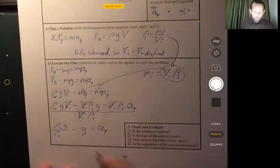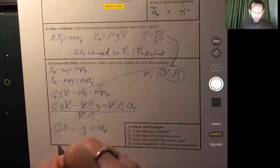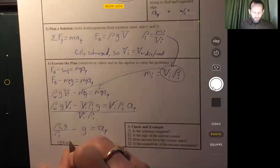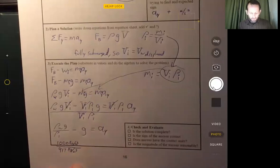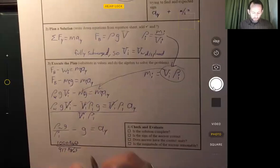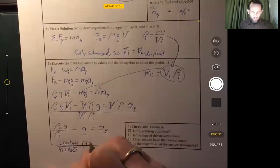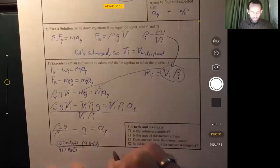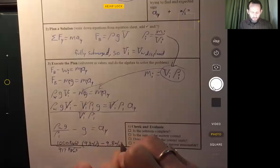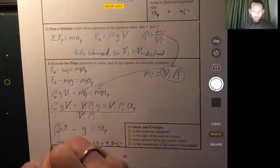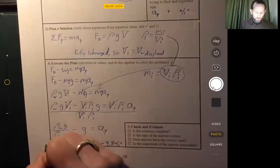And so now we can plug in these values. The density of water is 1,000 kilograms per cubic meter divided by the density of ice, which was given in the problem as 917 kilograms per cubic meter, multiply that by 9.8 meters per second squared, and subtract 9.8 meters per second squared. And that is equal to our acceleration.